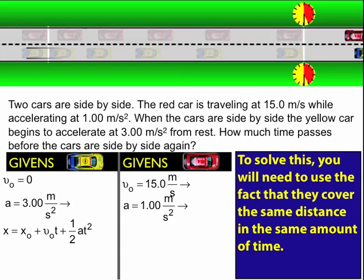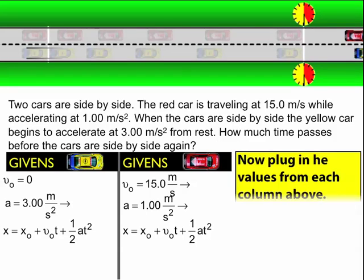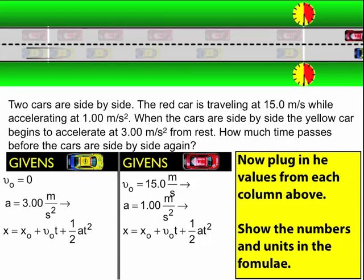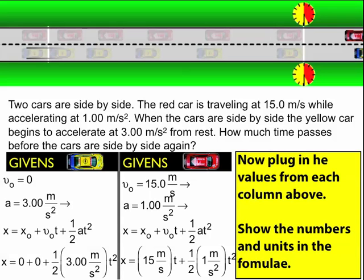x equals x naught plus v naught t plus 1/2 at squared. Same thing for the red car. Now what I'm going to do is I'm going to take the values above the equation and plug them into the equation. So now when I do that, you can see my two expressions using the givens above them.